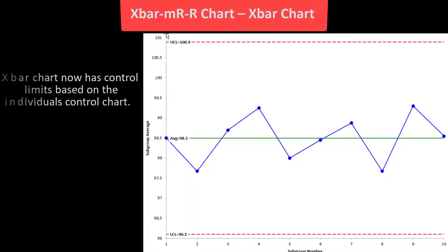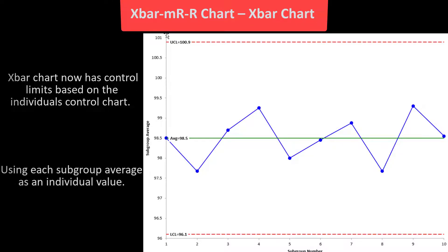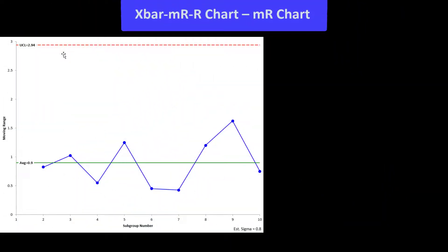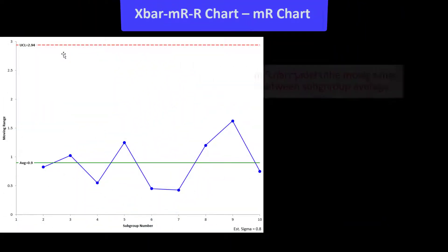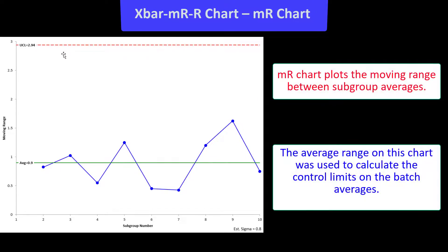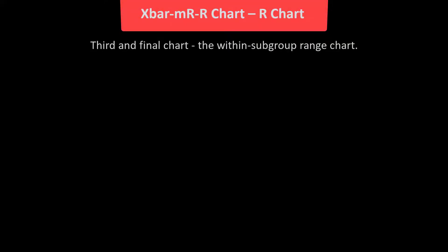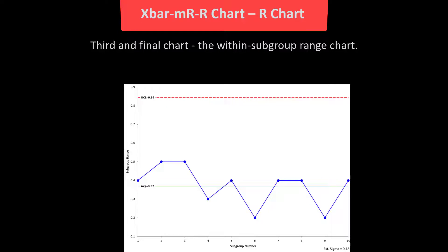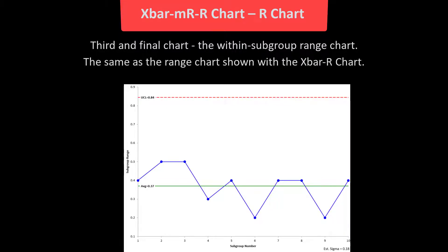Using an individuals control chart to replace the X-bar chart calculations gives an average moving range of 0.9 — compared to 0.37 from the X-bar calculations. The upper control limit for the moving range chart is 2.94, compared to 0.84 on the range chart. The control limits on the X-chart are now wider. Here's the X-bar chart treated as an individuals chart, with control limits based on the individuals control chart, using each subgroup average as an individual value.